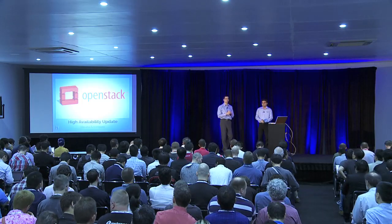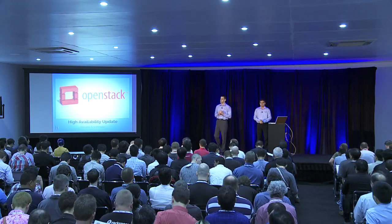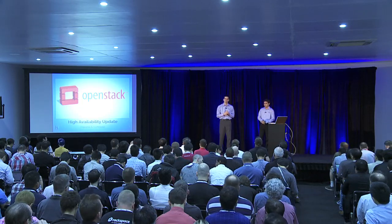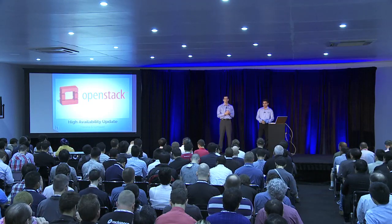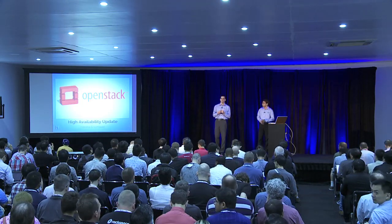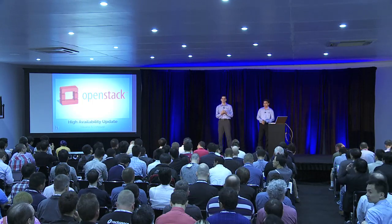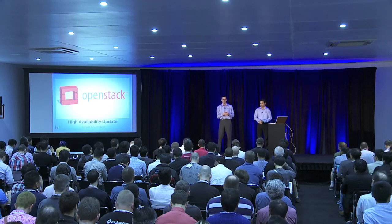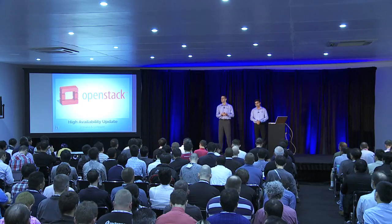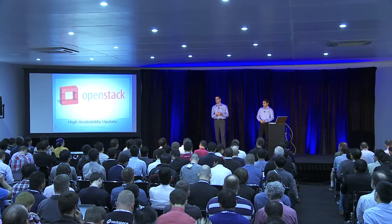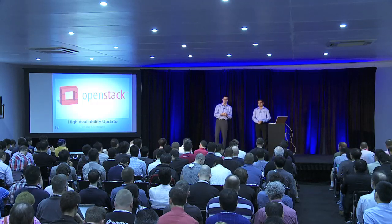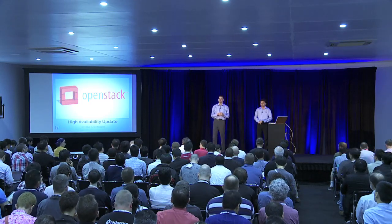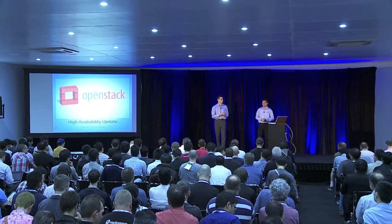We're going to get started. This presentation has become a tradition of sorts at the OpenStack Summit — I think it's the third time we're doing this. We're calling this the High Availability Update. As we can see from the turnout here today, we have a significant portion of the OpenStack user community that is very interested in High Availability and in following the progress that OpenStack is making in this field. What we would like to present today is a brief overview of the recent changes and improvements made in the Havana release, and an outlook on what we can hope for in High Availability for Icehouse.